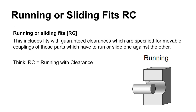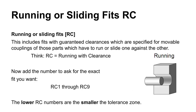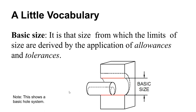With running fits, you're always going to have a little bit of gap — some clearance between the hole and the shaft. There has to always be a gap. The size of the gap — the amount of clearance — comes from the number code. The lower the number, the smaller the tolerance zone, so things tighten up as the number gets smaller.